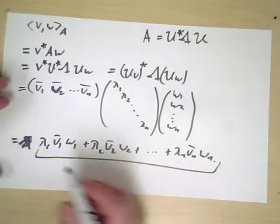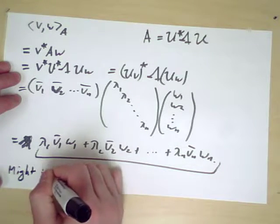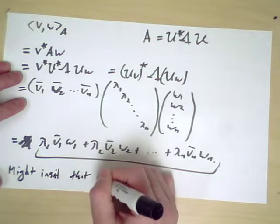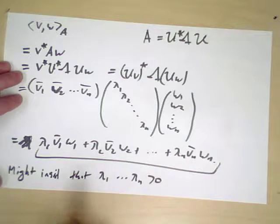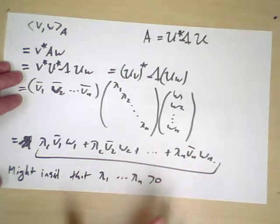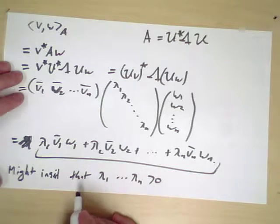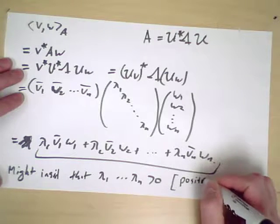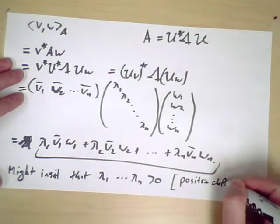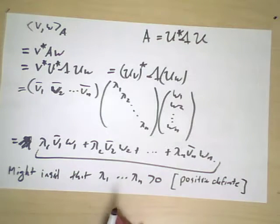The only condition you might want to have is that you might insist that lambda 1 up to lambda n are all positive. Remember, the spectral theorem guarantees that they are already real, so we don't have to worry about having imaginary answers here, but you might want to insist that they are all positive. In that case, we call this positive definite.